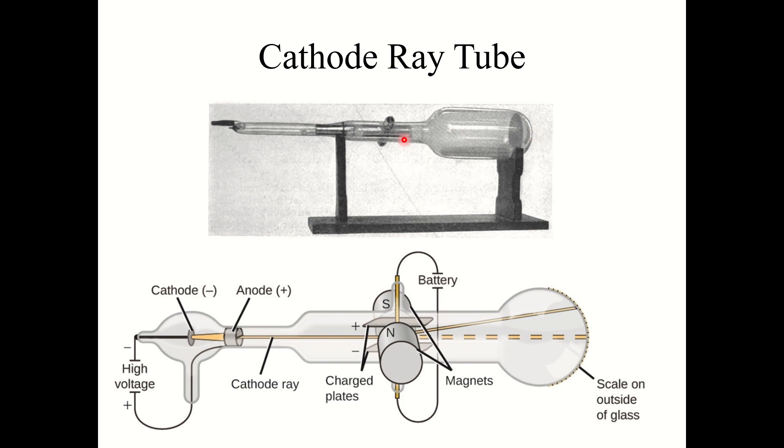Now a cathode ray is essentially just a stream of charged particles. So we've got a cathode that produces charged particles. They flow towards the anode and they're directed out down the tube here. So this is our cathode ray, just a stream of charged particles.